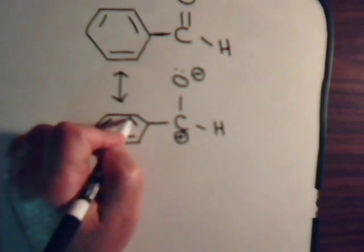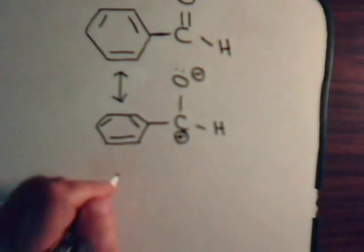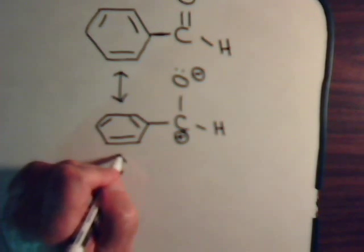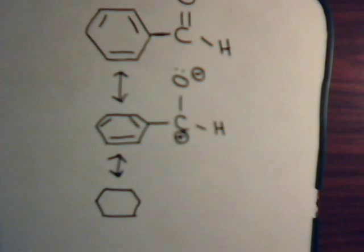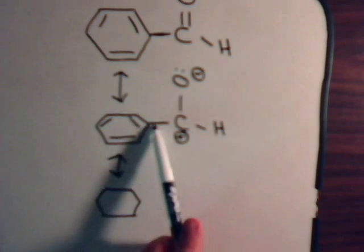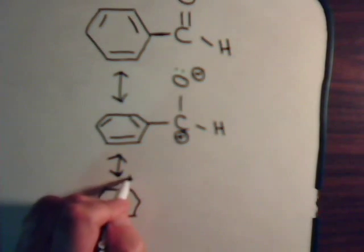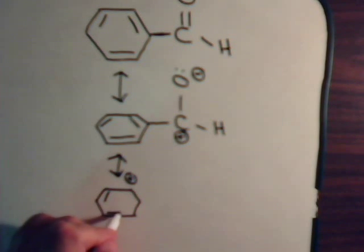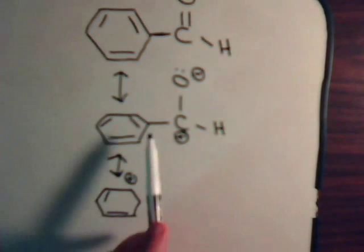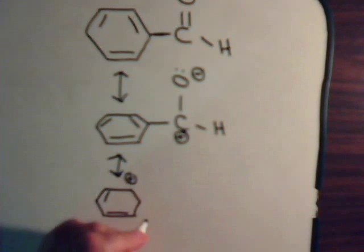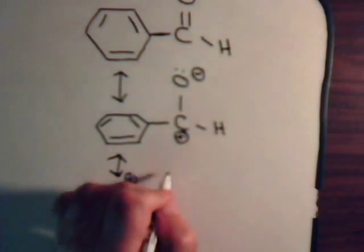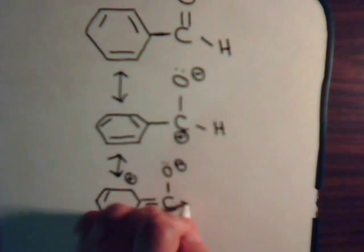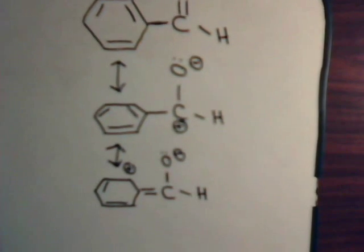Now between these two carbons we have a pi bond. Suppose that in this pi bond, this carbon keeps the pi electron from that one — that would leave this one with an empty p orbital and a positive charge. This carbon has two pi electrons but donates one to the carbon with the empty p orbital, forming a double bond. So we would have that canonical structure.